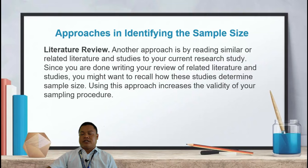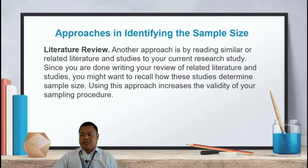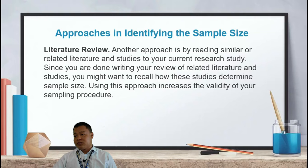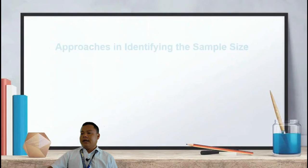Another approach in identifying sample size is through a literature review — reading similar or related literature and studies to your current research study. Since you have already written your review of related literature, you can recall how those studies determined their sample size. Using this approach increases the validity of your sampling procedure.